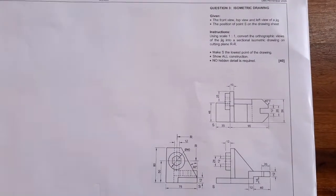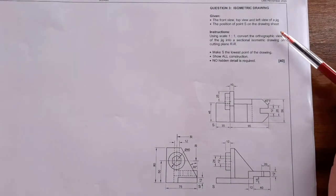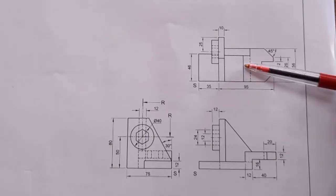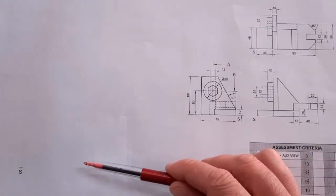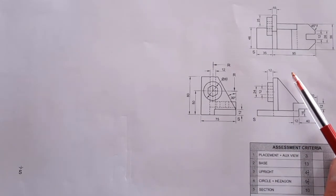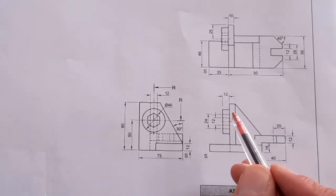Let's have a look at the actual question that was asked last year. Here it is in the download in the description below. What is given: the front view and the top view of a jig, and of course the left view, the position of point S on the drawing sheet. Using scale 1 to 1, convert the graphic view of the jig into a sectional isometric drawing on cutting plane RR.